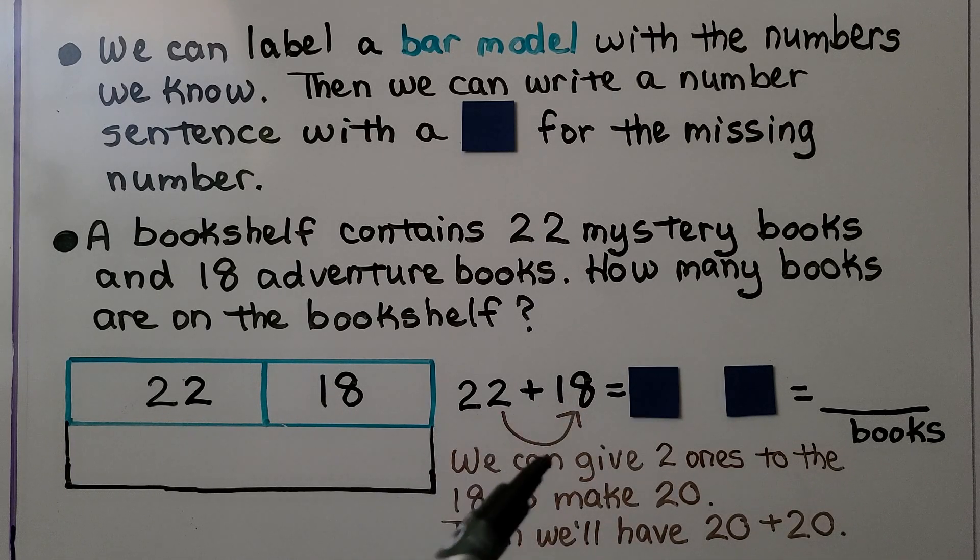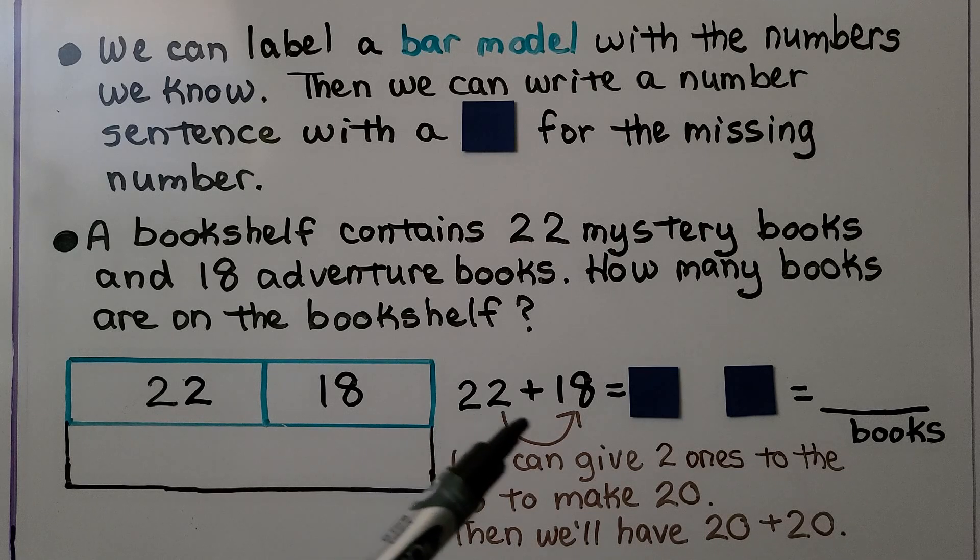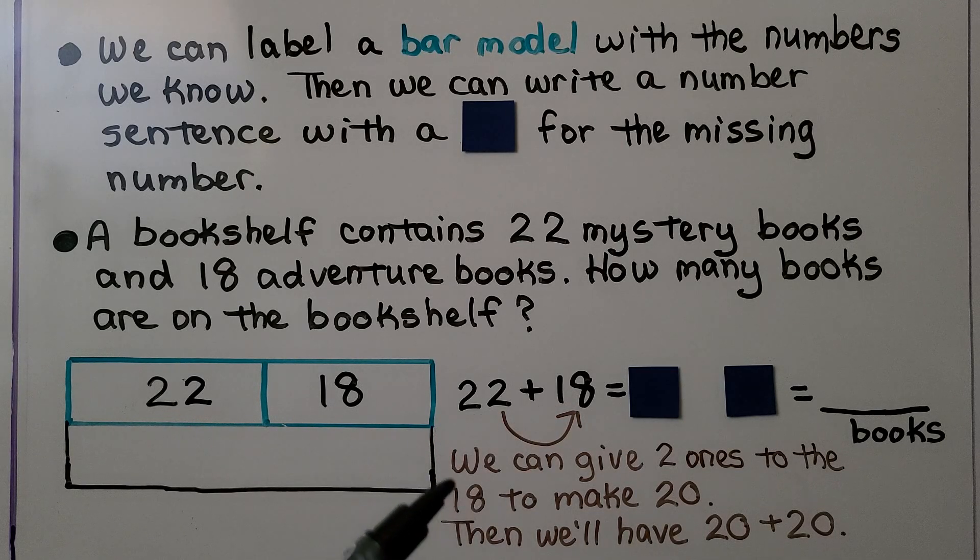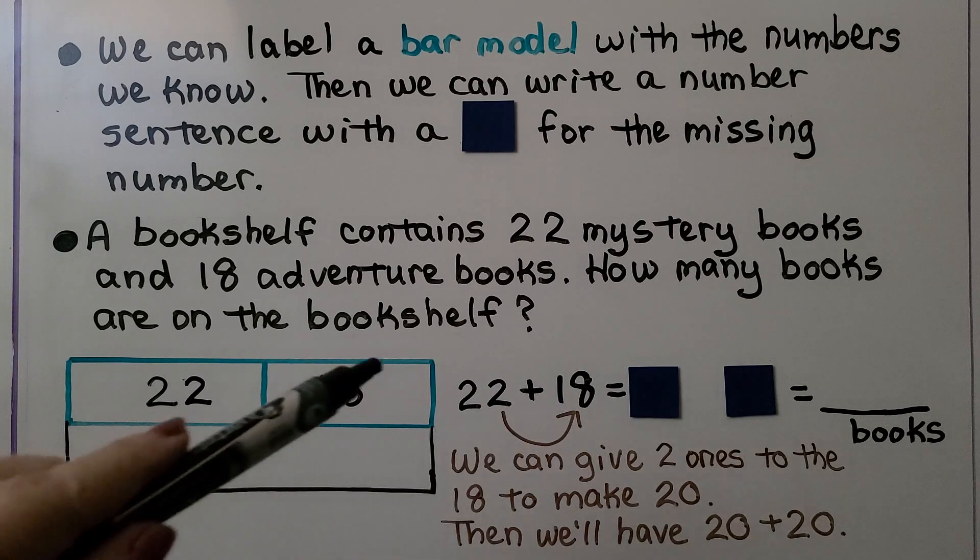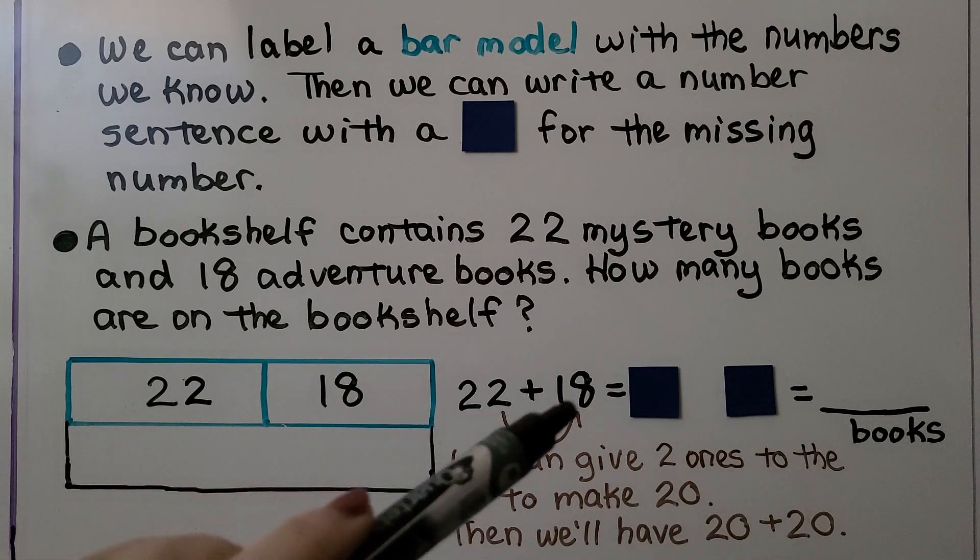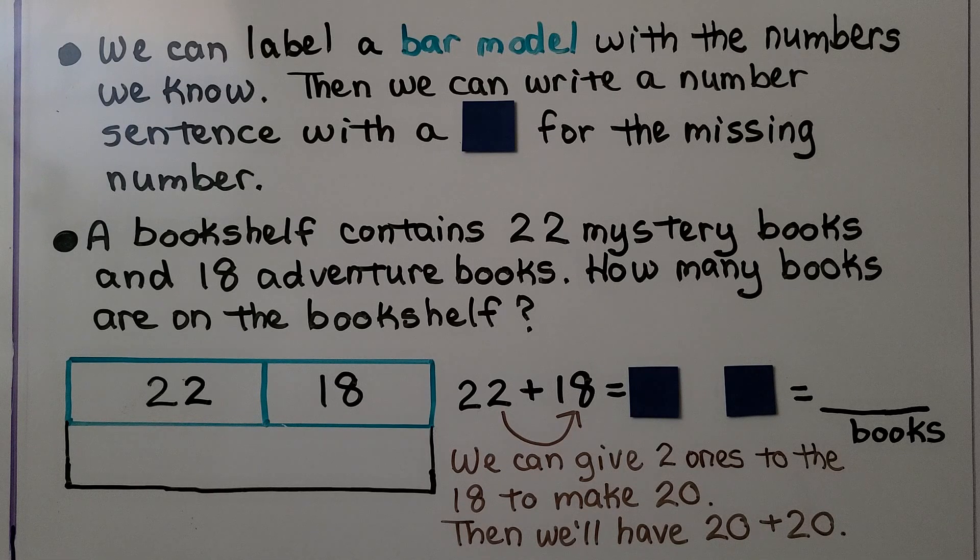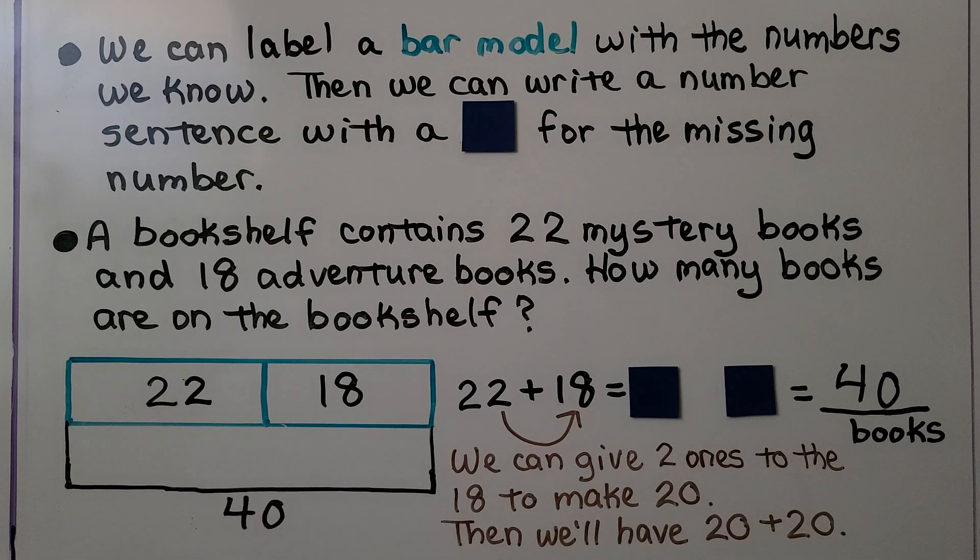22 plus 18 is equal to this square. We think 18 only needs two ones to be 20. So we can give two ones from here to the 18 to make a 20. And now that's 20 plus 20. That's easy to add. Do you know what 20 plus 20 is equal to? If you said 40, you're right. That means this square is equal to 40 books.